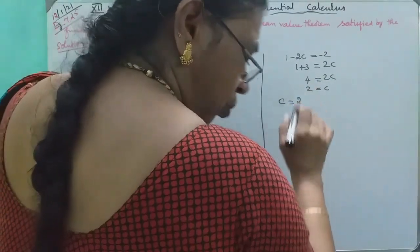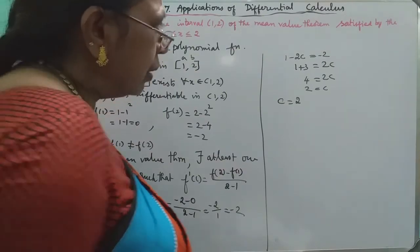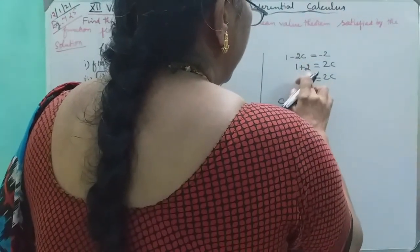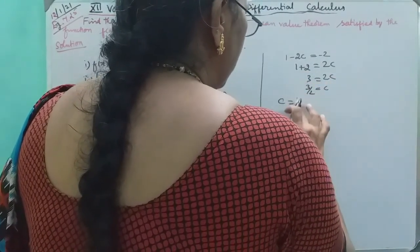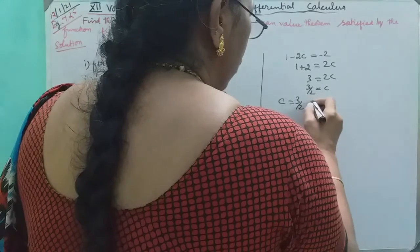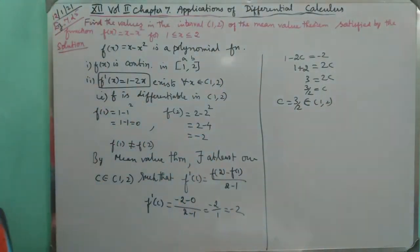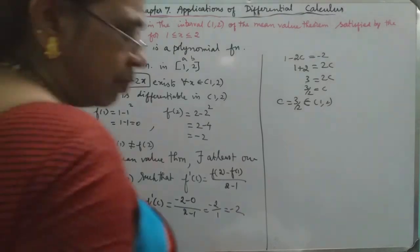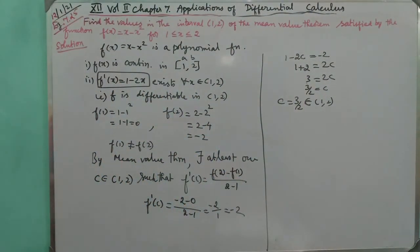Now, c equals 3 by 2, which is 1.5. Since 3 by 2 lies in the open interval (1,2), this is the valid c value satisfying the mean value theorem. Okay, bye.